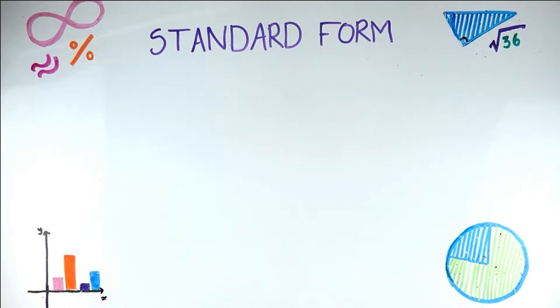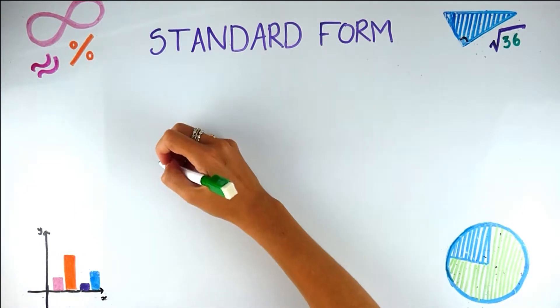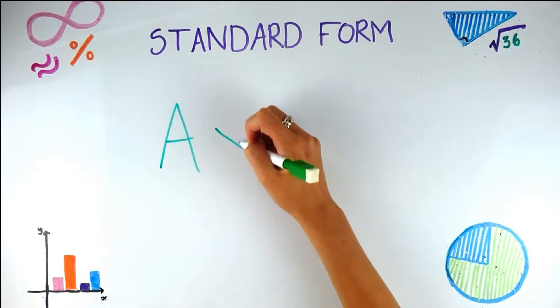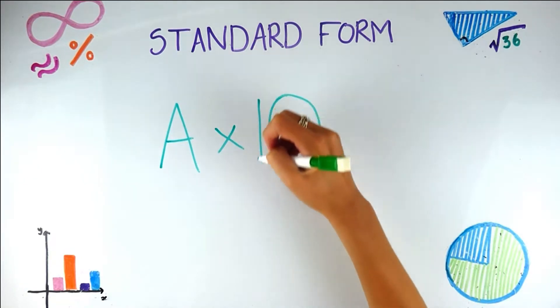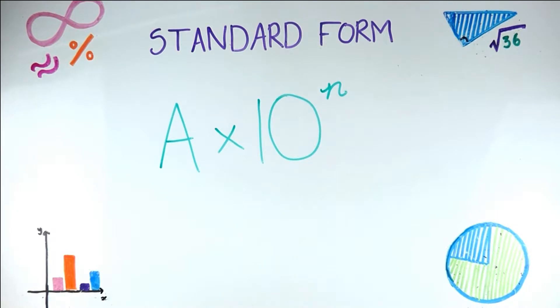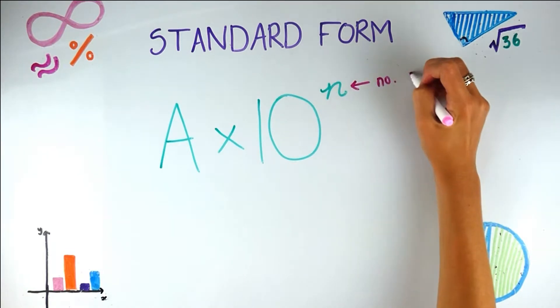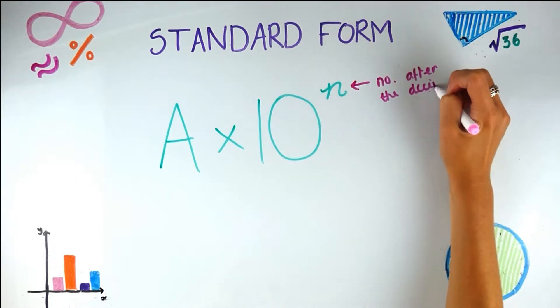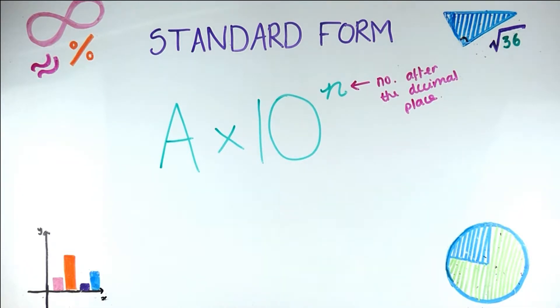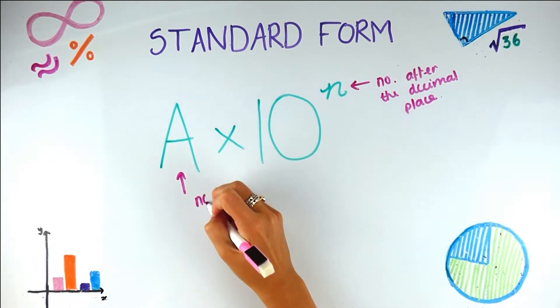So what is this so-called standard form? Well, it looks like a × 10^n, which doesn't look that standard — apparently it is. So n is the number after the decimal place, which will make more sense when we do an example. And a is a number — not just any number. a has to be between one and ten: it can equal one but cannot equal ten, so: one, two, three, four, five, six, seven, eight, nine.